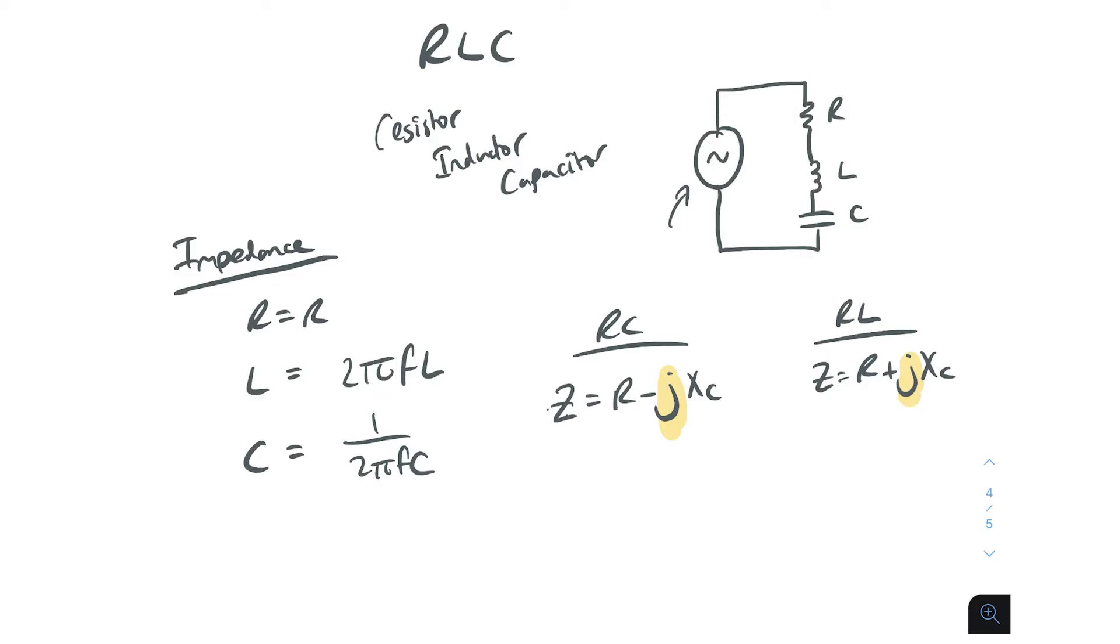The XC is the reactance value in ohms for the capacitor. Sorry, I put XC, but it should be XL here. So the XC is the reactance value for the capacitor, and the XL here is the reactance value for the inductor. The key thing to note is that for the capacitor we've got a minus, and here for the inductor we've got a plus.